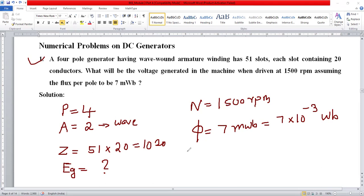Let us note the equation: EG equals ZNφ divided by 60 times P divided by A. From this equation, I would like to substitute all the variables given in the question. Z equals 1020.